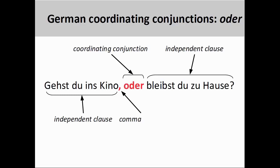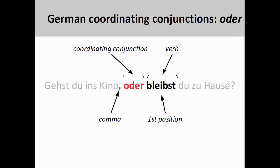Oder can also be used to present alternatives between activities expressed in two independent clauses. The first independent clause, 'Gehst du ins Kino' (Are you going to the movies?), forms the first alternative, and the second independent clause, 'Bleibst du zu Hause' (Are you staying home?), presents the second alternative. Both clauses, which are questions, have a second-person singular present tense verb in the first position. German forms questions by putting the verb in the first position at the beginning of a sentence. The coordinating conjunction oder, therefore, does not alter the syntax of the second independent clause.